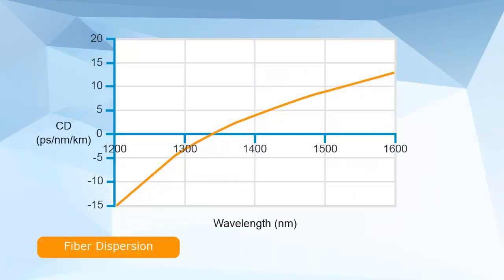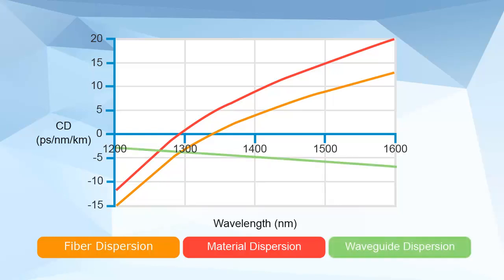Chromatic dispersion is caused by material dispersion and waveguide dispersion. By changing the refractive index profile in the fiber core, both the waveguide and chromatic dispersion can be changed.